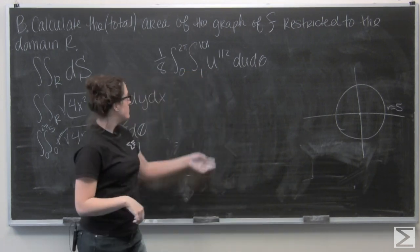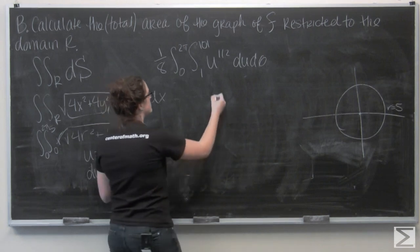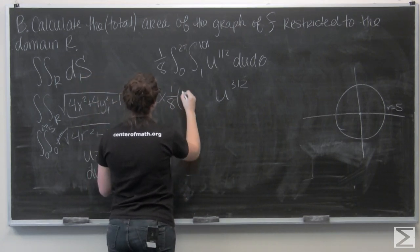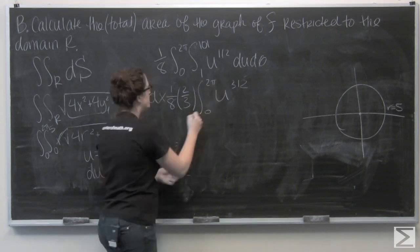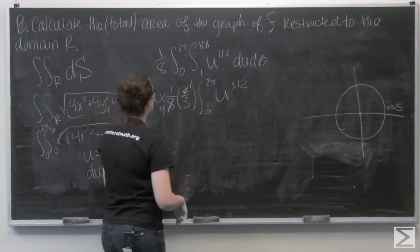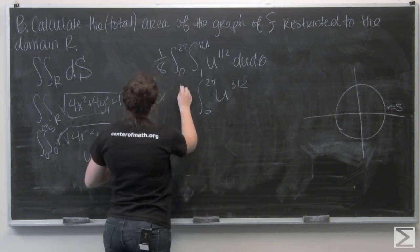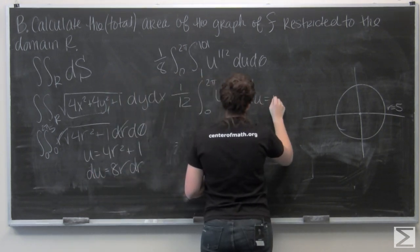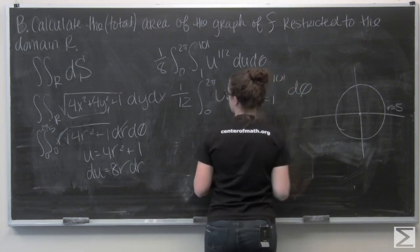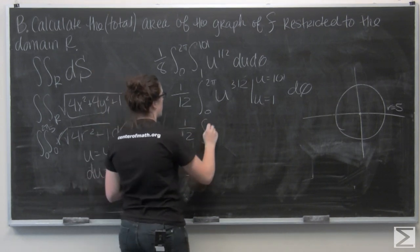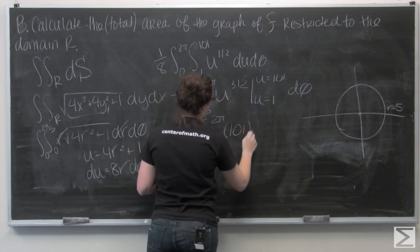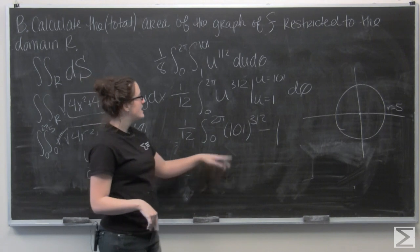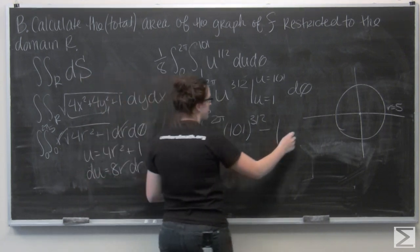Okay, we're ready to integrate. So, integral of u to the 1 half. Add 1 to the exponent, and then divide by the exponent, or multiply by 2 thirds. I'm going to pull that 2 thirds out and multiply. So, I'm looking at 1/12. And I want to evaluate this from u equals 1 to u equals 101. Okay, let me go ahead and plug in. So, for u equals 101, I get 101 to the 3 halves, which isn't going to be a nice number. So, I'm just going to leave it like that. And then minus 1 to the 3 halves, which is just 1.